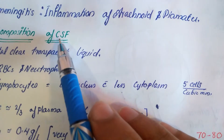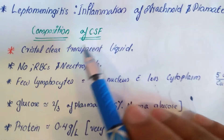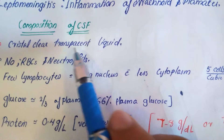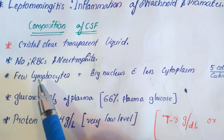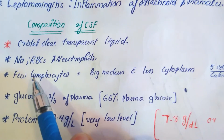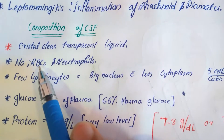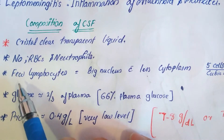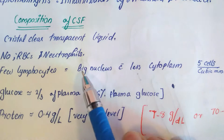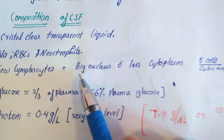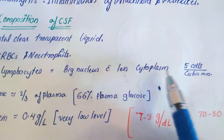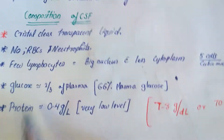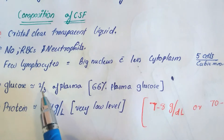Cerebrospinal fluid is formed by the choroid plexus and drains into the superior sagittal sinus. The color of CSF is crystal clear and transparent. Regarding its composition: are there any RBCs in CSF? No. Are there any neutrophils? No. But we can see a few lymphocytes — which have a big nucleus with less cytoplasm.